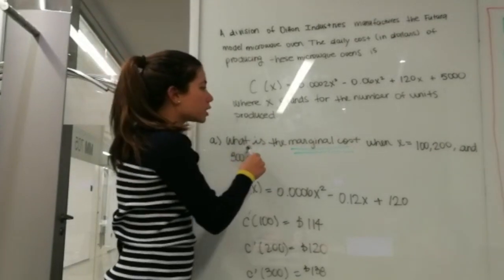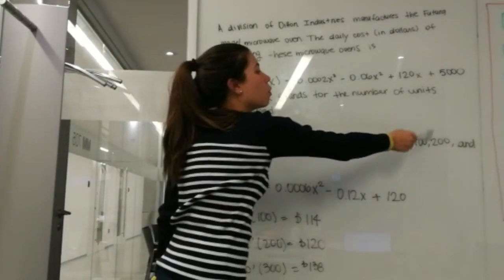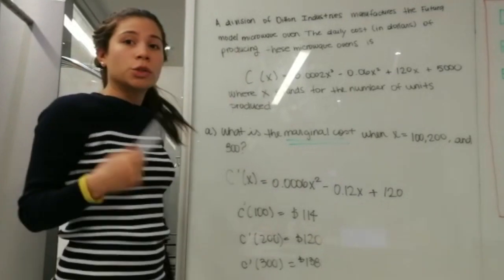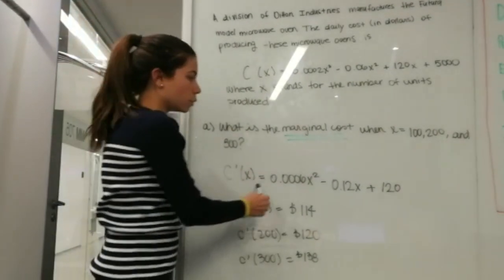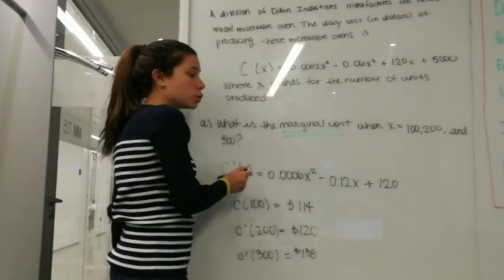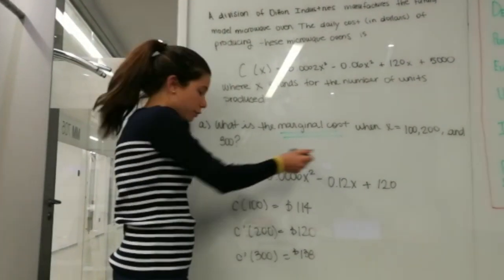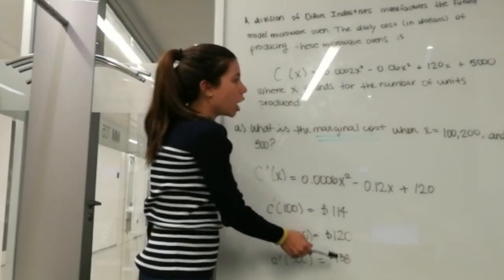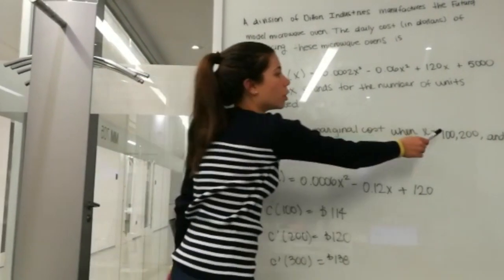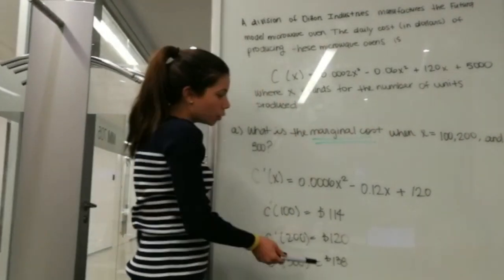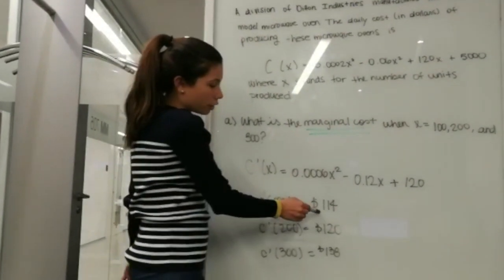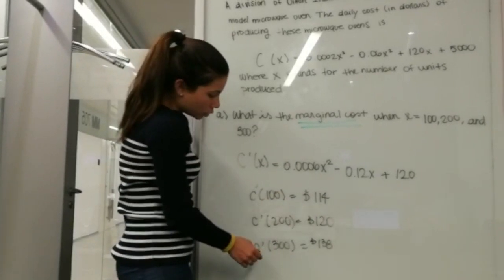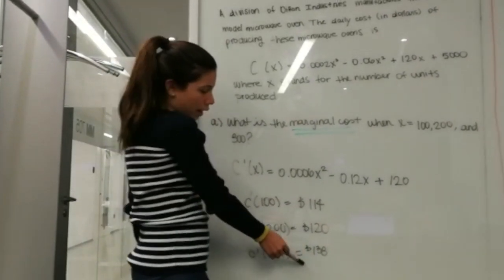What is the marginal cost when x is 100, 200, and 300? First, we have to find the derivative of the cost function. After defining the derivative of the cost function, we simply plug in the values, and we have the answers: at 100, the marginal cost is 114; at 200, it is 120; and at 300, it is 138.